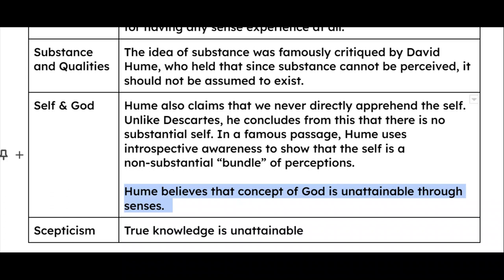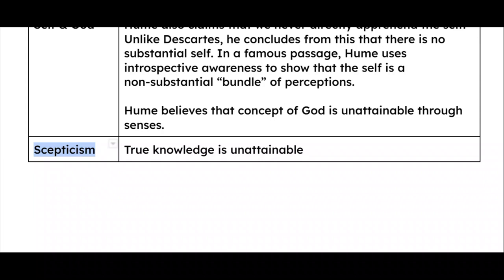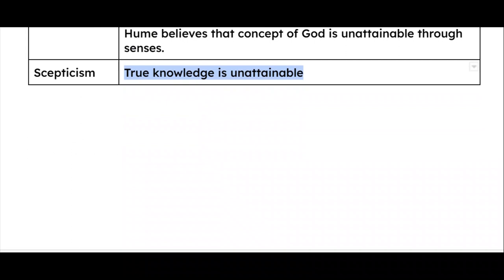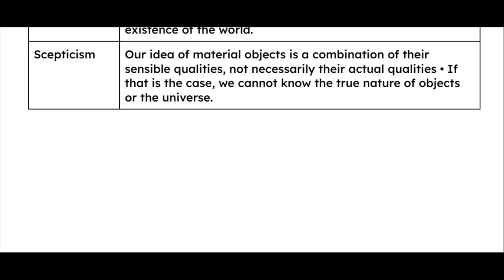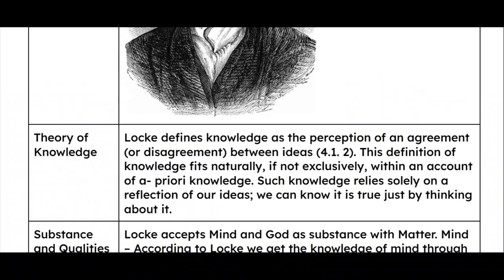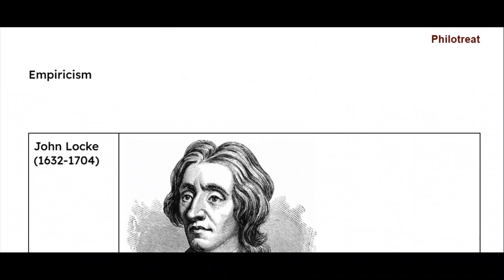Hume also believes that the concept of God is unattainable through senses. So here we can see that he is rejecting both self and God — self because it cannot be perceived, and God because it could not be perceived by senses. About skepticism, his idea is that true knowledge is unattainable, and therefore he was also a skeptic. So we have completed our discussion of three philosophers — John Locke, George Berkeley, and David Hume. If you believe any of the concepts discussed are incomplete or something more could be added, you are welcome to comment. Thank you very much for watching.